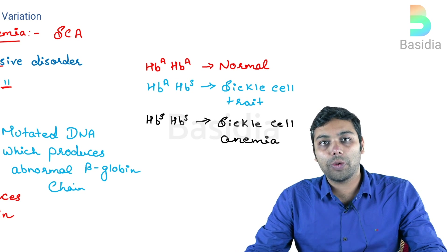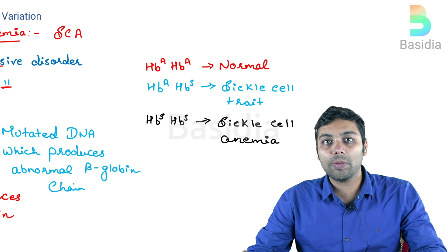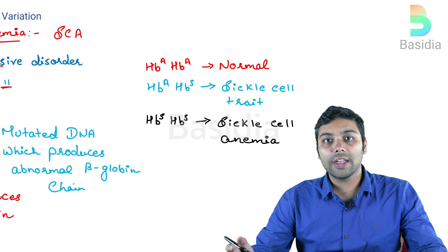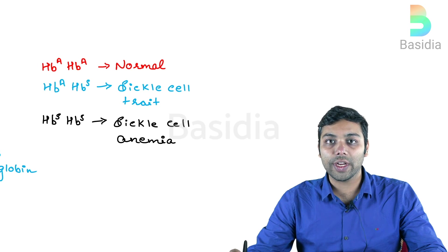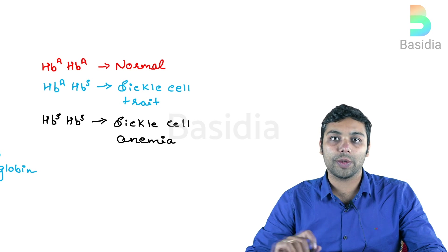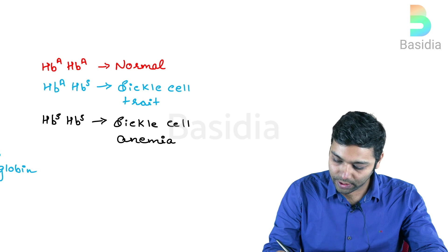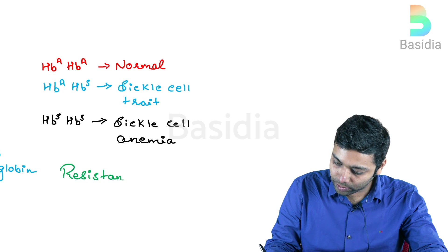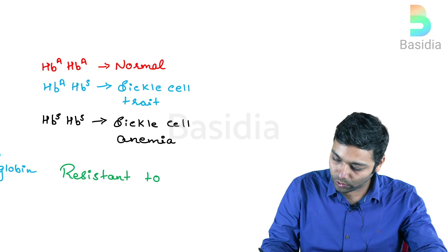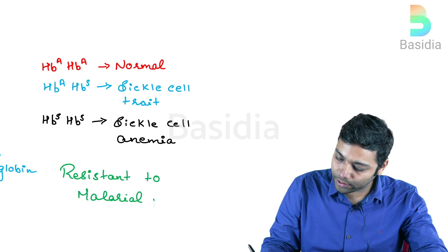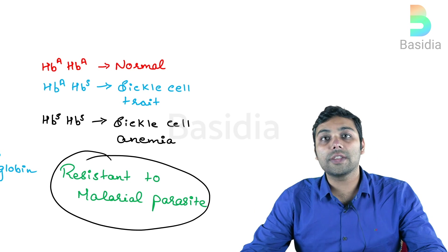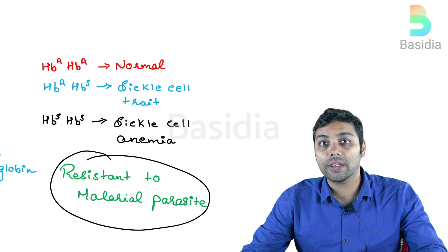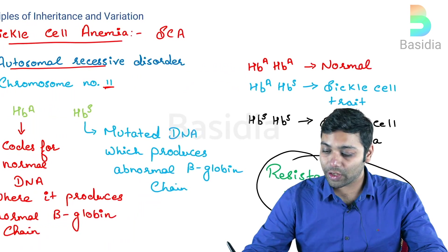This disease is very common among the African population, where the mutation is quite common. Because of this, they generally suffer from reduced uptake and supply of oxygen to cells and tissues. However, one benefit of sickle cell trait or sickle cell anemia is that the sickle cell RBC is resistant to the malarial parasite, reducing the chances of malaria in affected individuals.